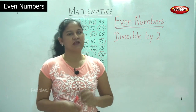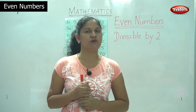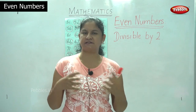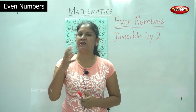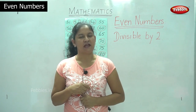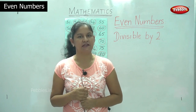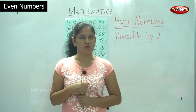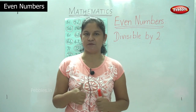So if at home you have small containers, you can take 5 containers, take any number of items, and place them in groups of 2 in each container. If there is nothing remaining, then you have even numbers. I hope you have understood the concept of even numbers.